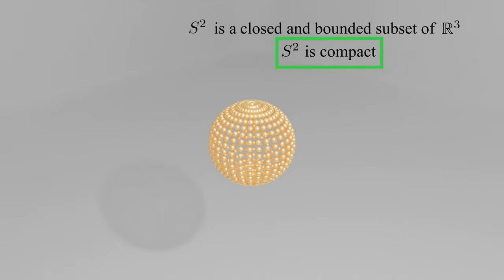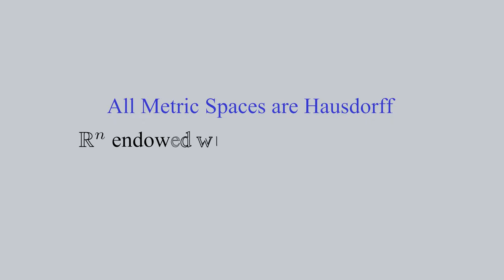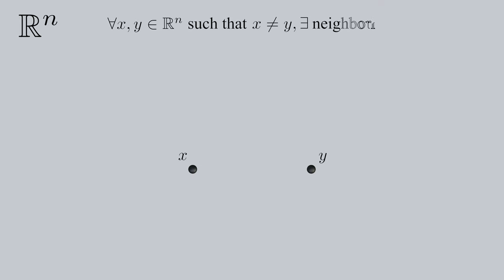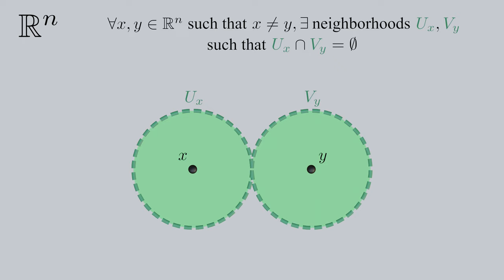I'd also like to go over why the extended plane is a Hausdorff space. It turns out that all metric spaces are Hausdorff, and being Hausdorff is a topological property. This makes Rn endowed with its standard topology a Hausdorff space because the standard topology can be thought of as induced by the Euclidean metric. Rn is Hausdorff because for any two distinct elements X and Y in Rn, we can always find distinct neighborhoods U of X and V of Y. Neighborhoods being distinct means that their intersection is the empty set. But we can still prove a space is Hausdorff using open neighborhoods, and this proof is commonly done with these open balls' radii equaling half the distance between X and Y.